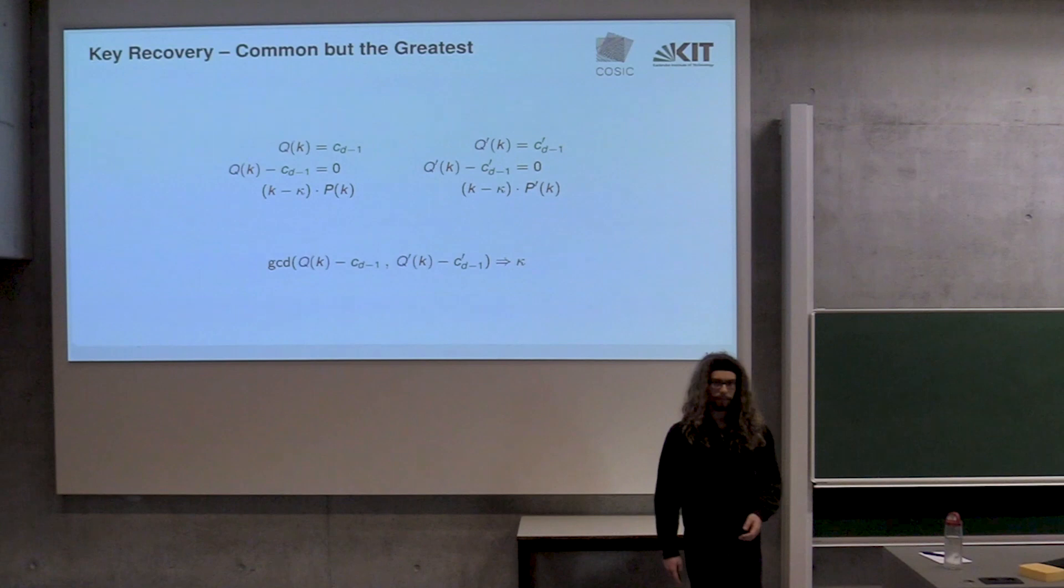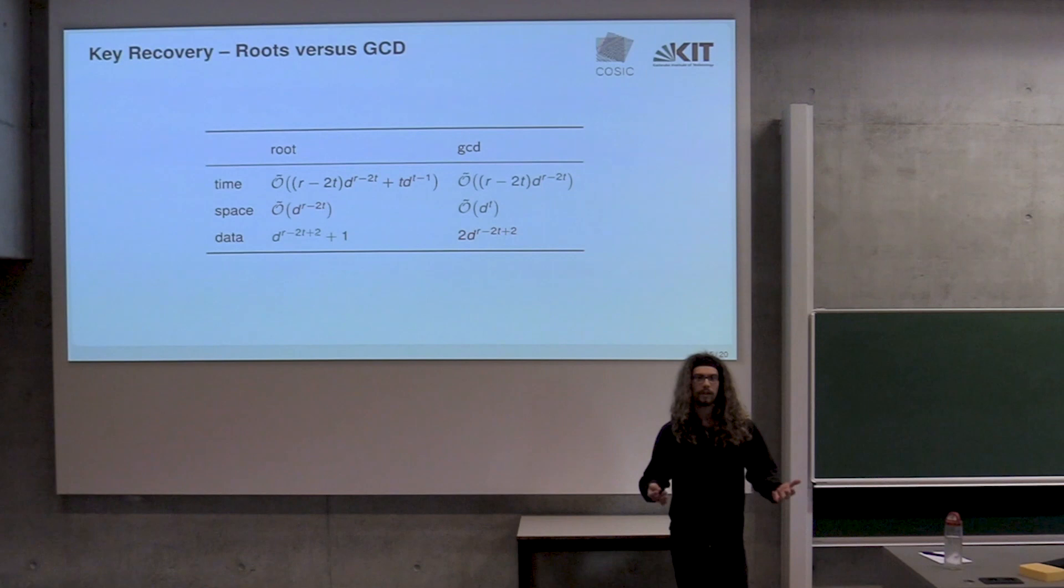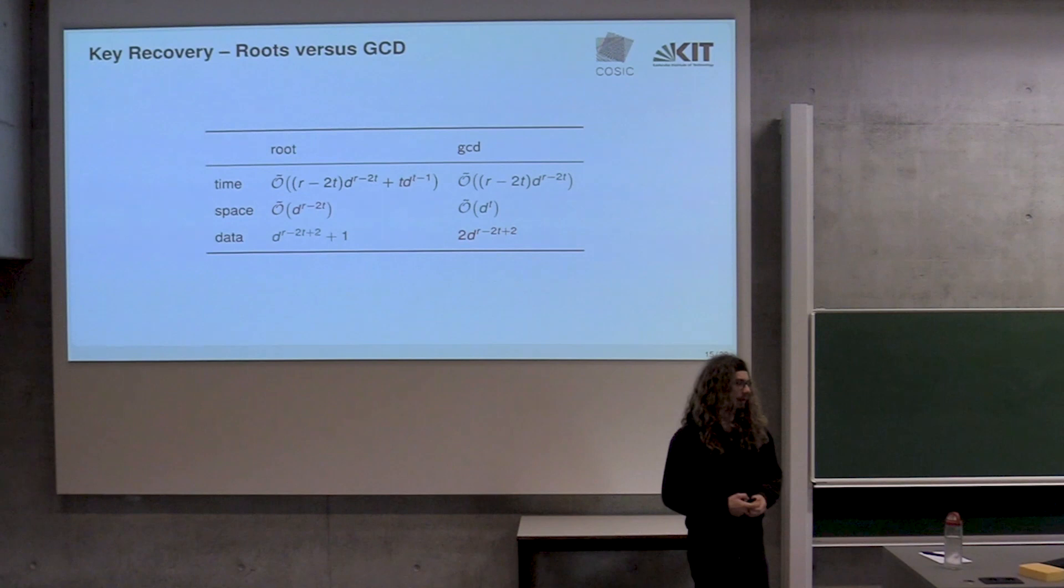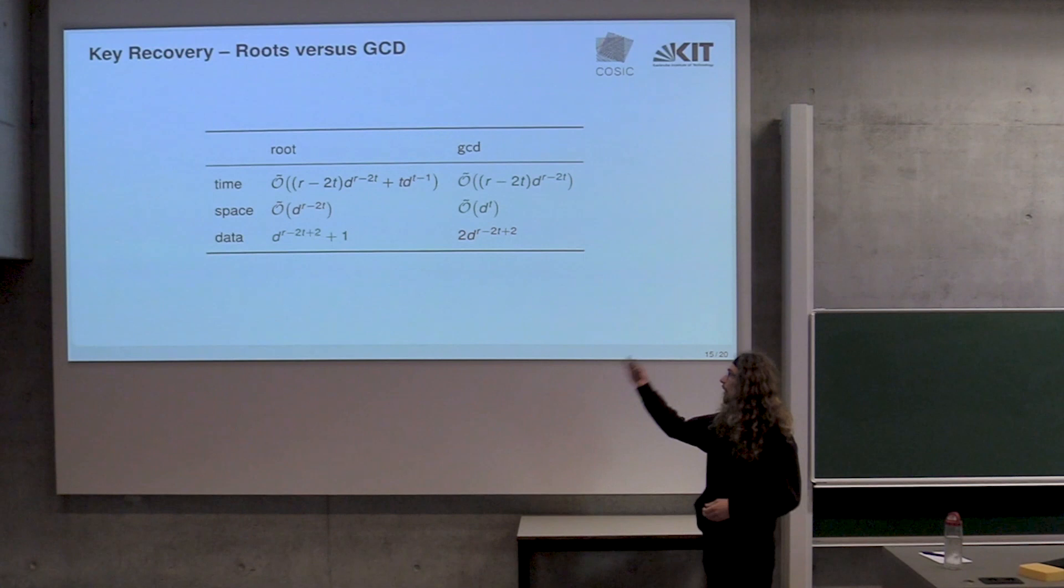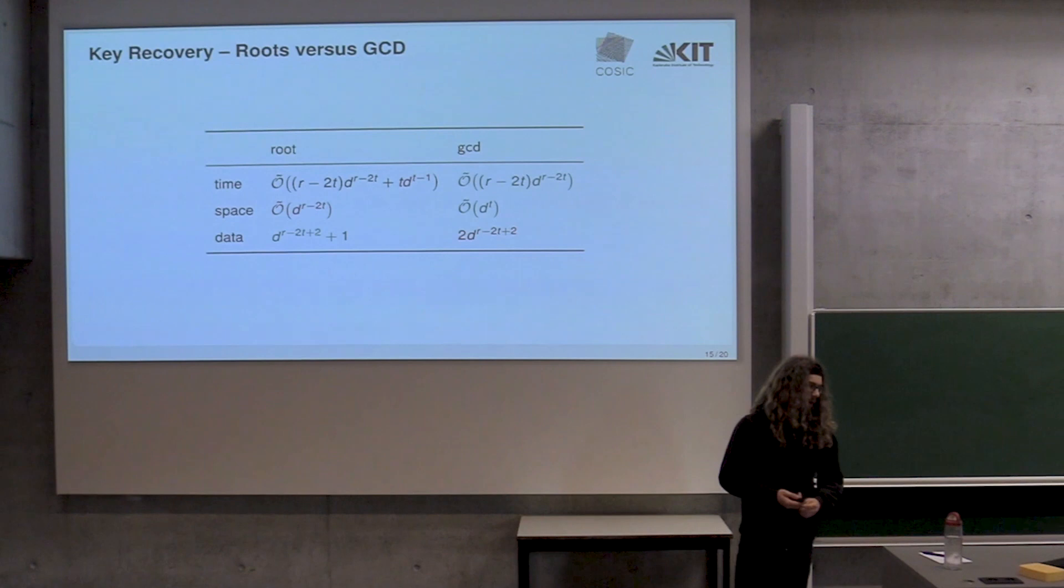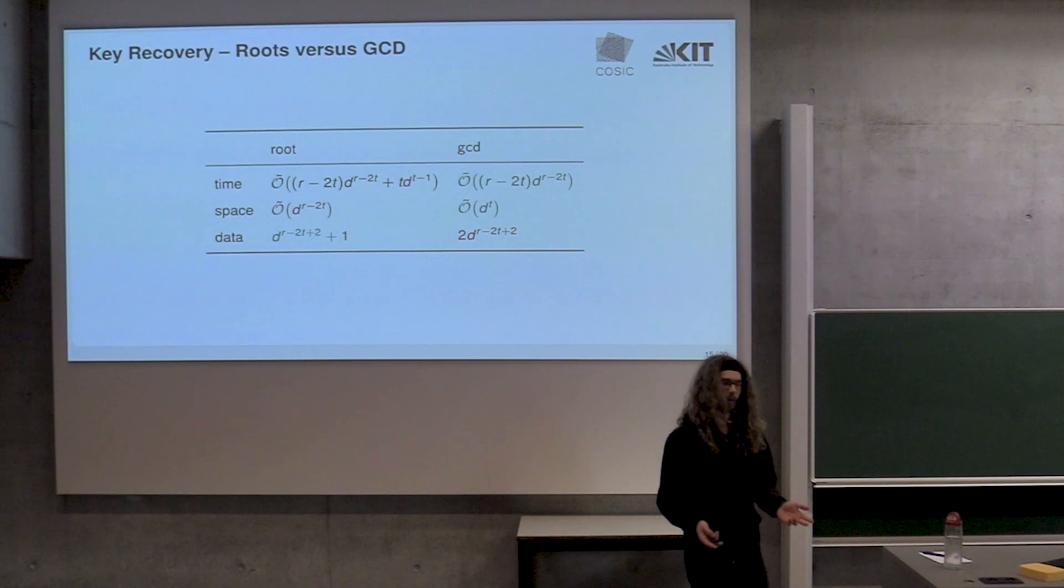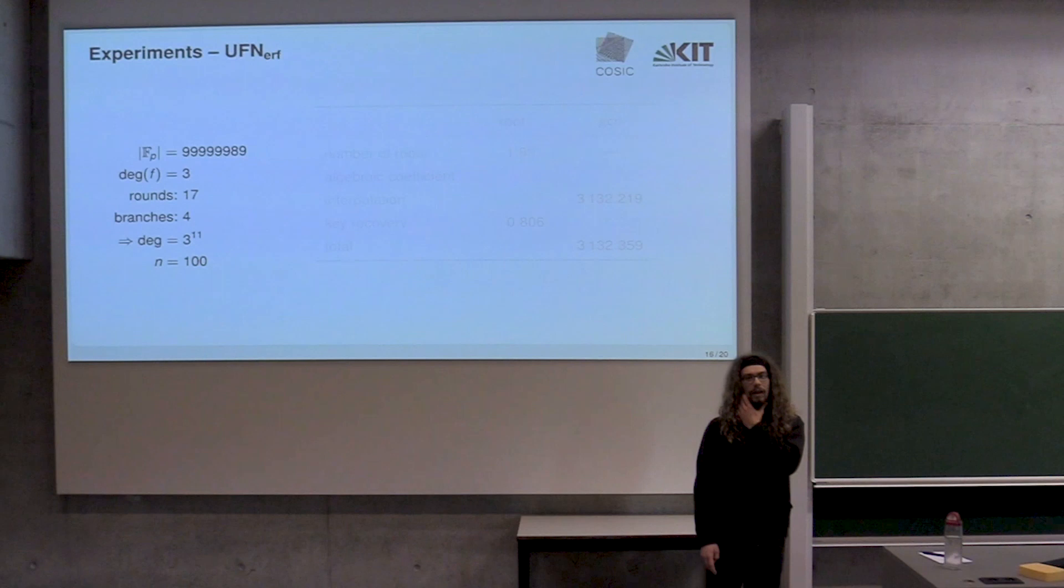By the factor theorem, we know the real key is a root of both these equations. That means K minus the real key kappa is a linear factor of this equation. With very high probability, this linear factor is actually the greatest common factor of these two equations. By computing the polynomial GCD, we can recover the key. The natural question that arises is: what are the trade-offs here? In terms of runtime, finding the roots is more expensive. In terms of space that we need, it is also more expensive. I got rid of all the log factors in the big O notation here - soft O notation. In terms of data complexity, the root finding method is cheaper by a factor of about two.